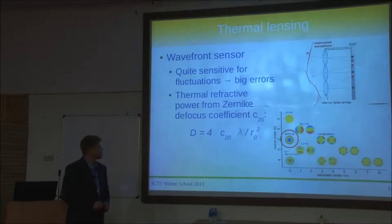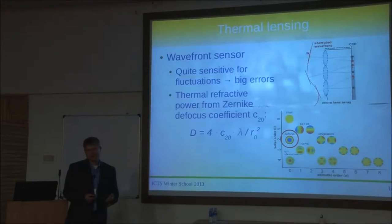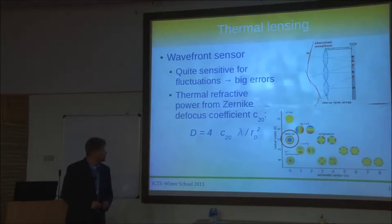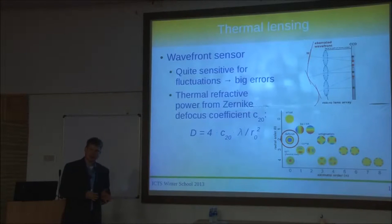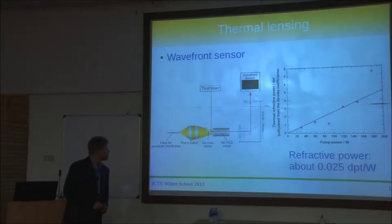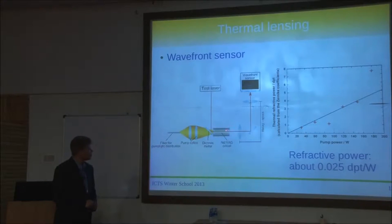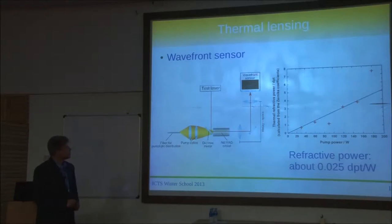If you pick the Zernike polynomials, each polynomial corresponds to some sort of aberration, which is convenient. There is one coefficient for the defocus term, and if you grab the coefficient telling you how big this term is in the overall wavefront, you can use that to get an idea of the thermal refractive power. The setup requires a test laser sent through the crystal, plus an imaging system that images the wavefront sensor picture to the end face of the crystal. You then do this analysis and end up with a curve giving information about the thermal refractive power.